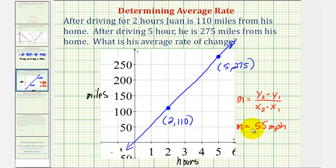The reason it's helpful to look at this graphically is that 55 miles per hour is the average rate of change. But we know from our experience, Juan did not drive 55 miles per hour for this entire time period. He probably drove faster and slower throughout this trip.